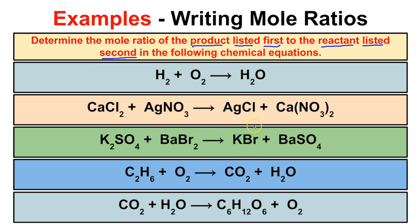In this example, we are asked to determine the mole ratio of the product listed first to the reactant listed second in the following chemical equations. Products are everything to the right-hand side of the arrow; reactants are on the left-hand side of the arrow. The very first thing we have to do is balance the chemical equations, so let's go ahead and do that.